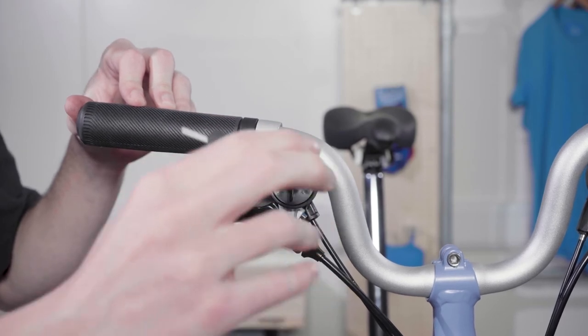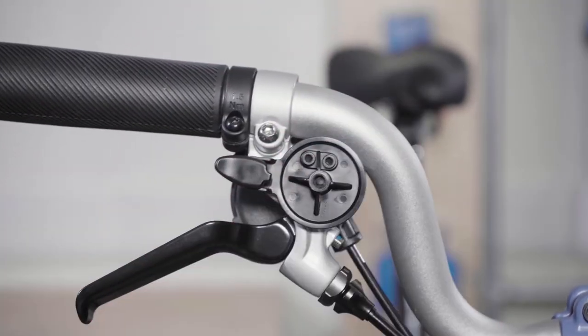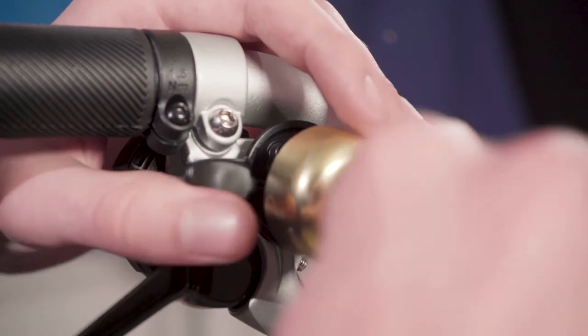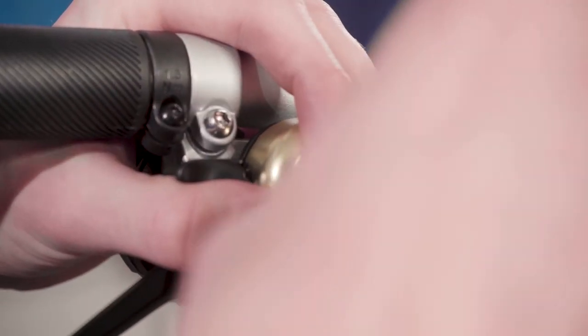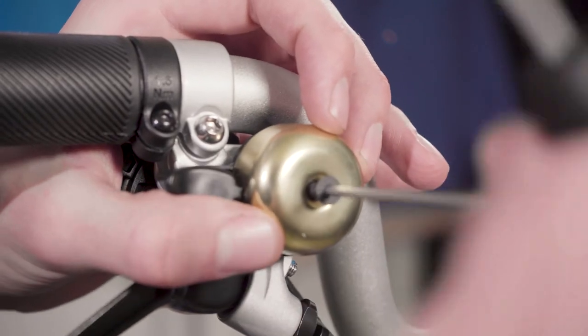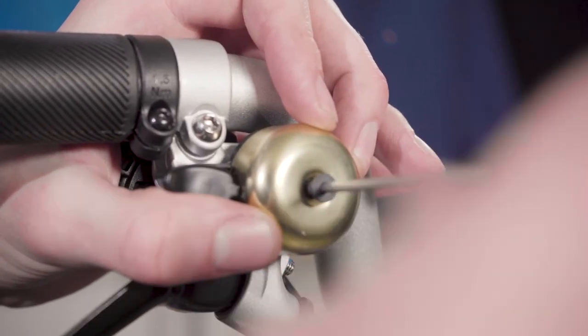Tighten with a 2mm hex key until it's hand tight. Place the bell cup onto the bell base and secure with the countersunk screw with the 2mm hex key. Also ensure this bolt is hand tight.